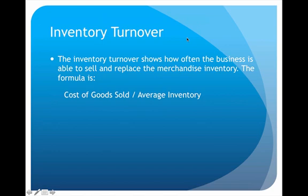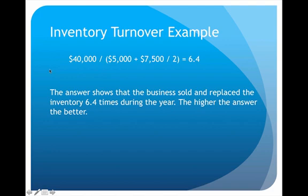The next turnover formula is inventory turnover, which tells us how quickly we get rid of our inventory and replace it. What causes us to get rid of inventory? We sold it. So this tells us how quickly we're selling and then getting new inventory. The formula is cost of goods sold divided by average inventory. In this example, the company had $40,000 in cost of goods sold and an average inventory, giving an inventory turnover of 6.4 — meaning they sold and replaced inventory 6.4 times during the year. The higher, the better.